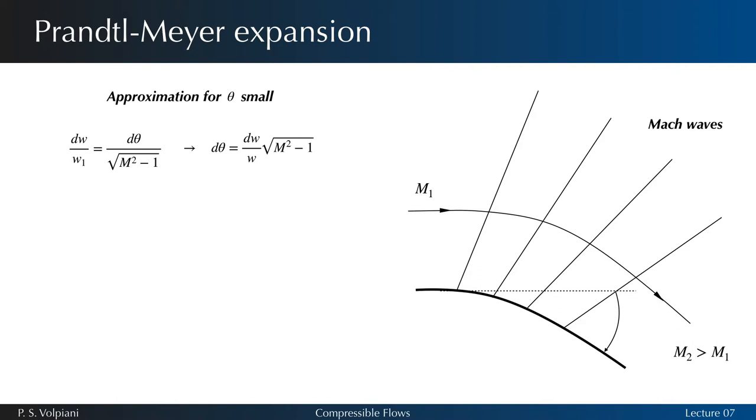We can establish the following relation. We denote nu m, the Prandtl-Meier function. By integrating the above relationship between state 1 and state 2, we obtain nu m2 equals theta plus nu m1.